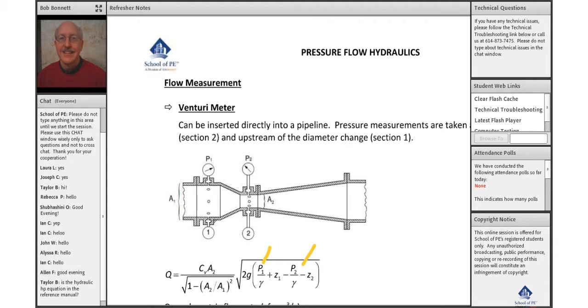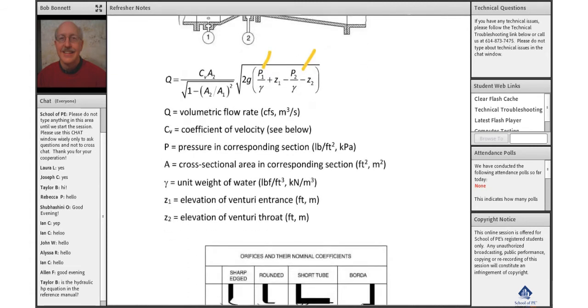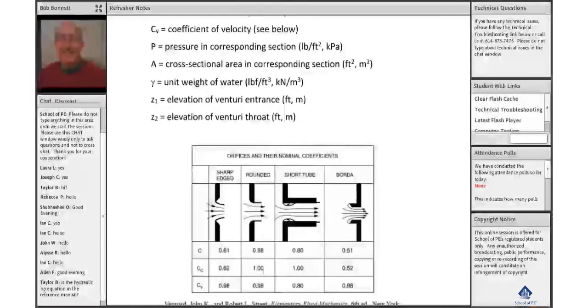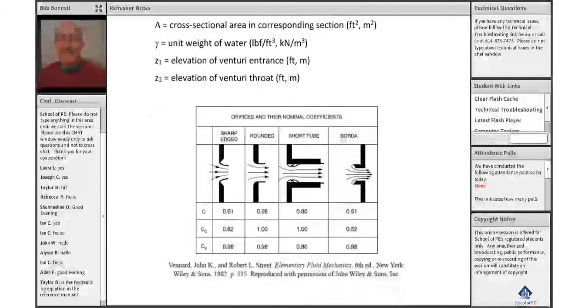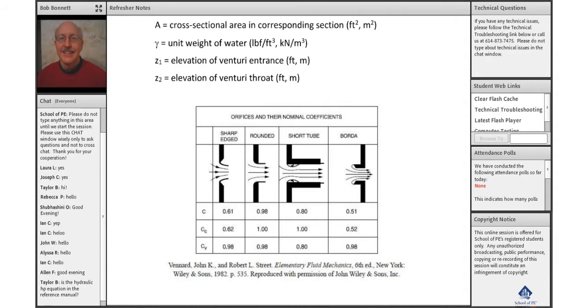We also see at the bottom of the page, what's on page 16 of your reference handbook: some examples of orifices and their nominal coefficients. The C sub V value in the equation for the venturi meter is listed out here in the bottom row—C sub V coefficient of velocity.